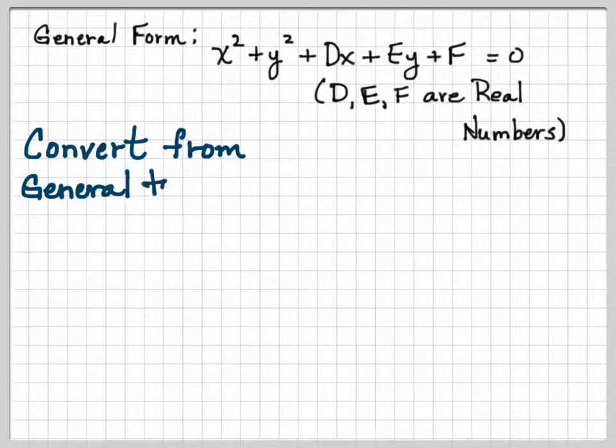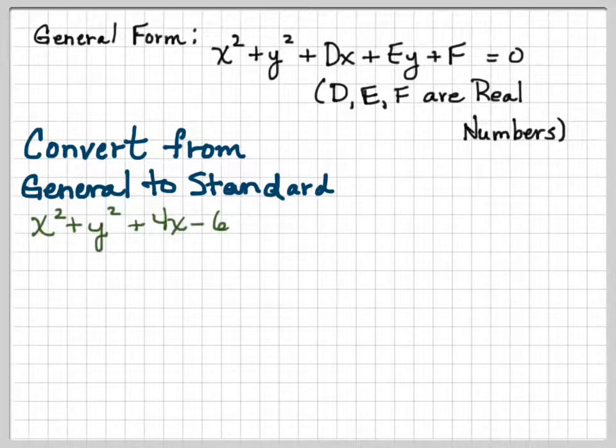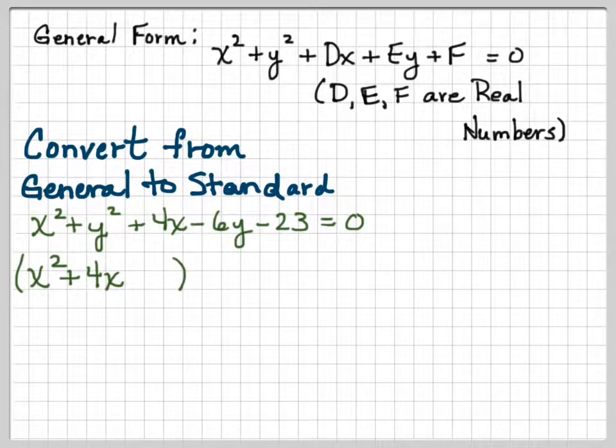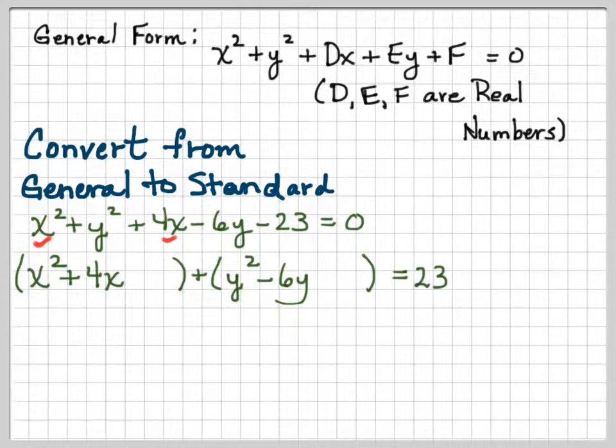So let's convert from the general to the standard. So as an example, here is the general form of a circle. And we want to convert it back to the standard so that we can more easily graph it. That way we can see where the center and the radius is. So what we're going to do is we're going to put the x terms together. And we have an x squared and a 4x. We're going to put them together and then leave a little bit of room to complete the square. And we'll put the y terms together and leave a little room to complete the square. And we're going to move the negative 23 over to the right hand side and make it a positive 23.